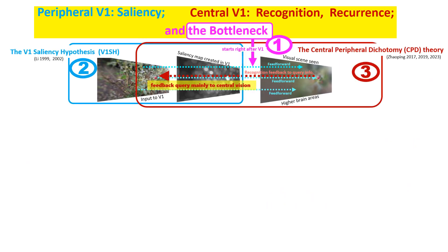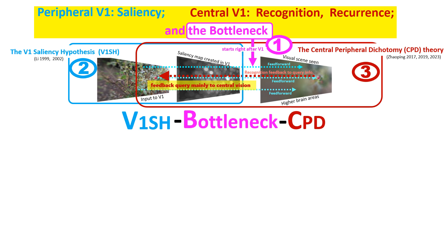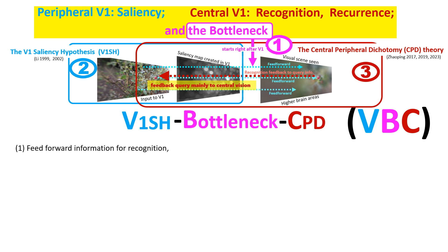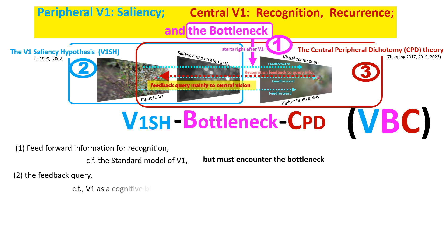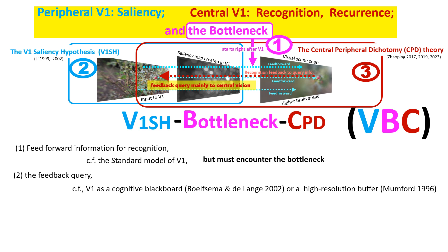Therefore, V1 has multiple roles in vision. It creates the saliency map to guide attention. It starts the information bottleneck and is a critical player in the feedforward-feedback network for visual recognition in light of the bottleneck. This framework provides a fresh perspective on how vision works. In feeding forward information for visual recognition, it resembles the standard model of V1, but adds that the feedforward information is massively limited by the bottleneck. Its feedback query can be related to the idea of V1 as a blackboard or high-resolution buffer; however, our feedback query is motivated by the presence of the bottleneck.